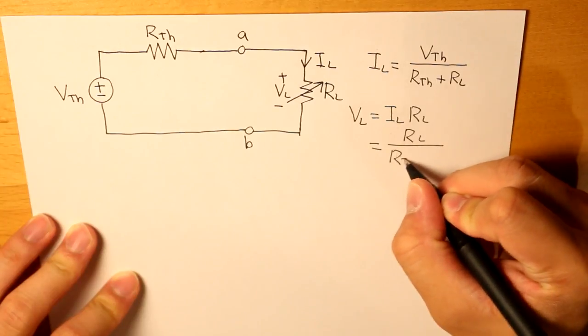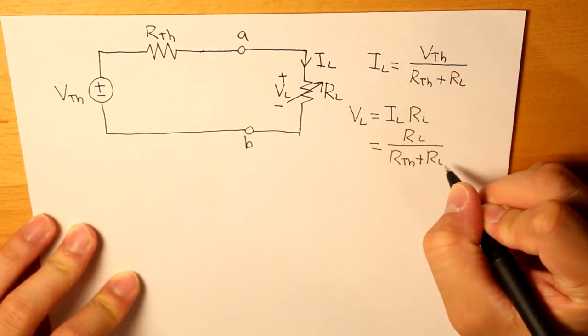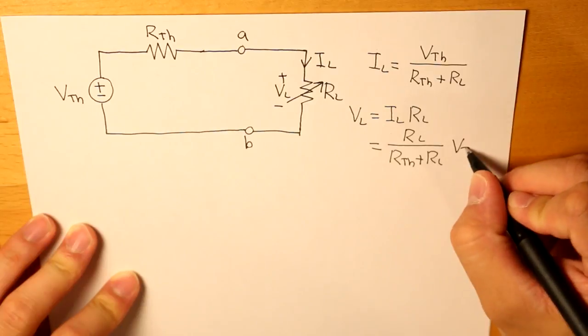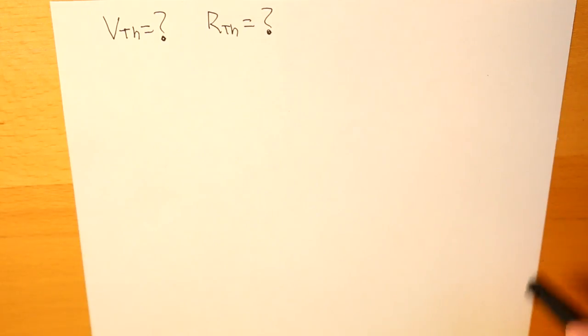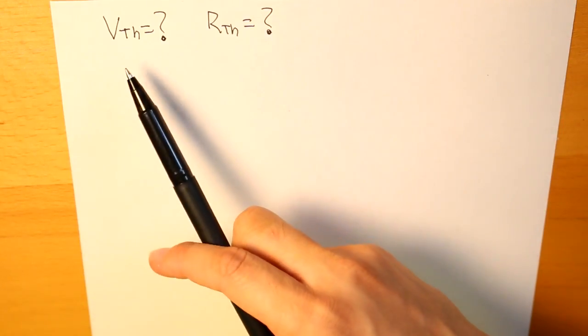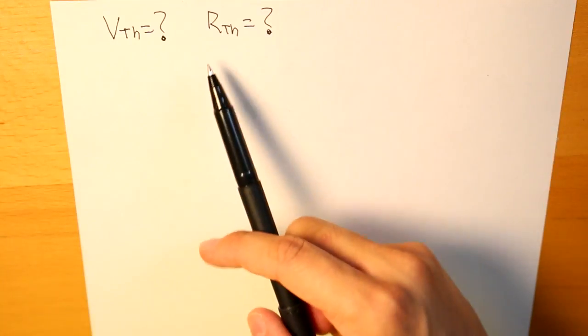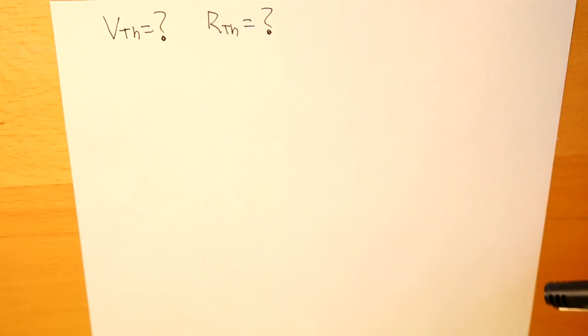by RTH plus RL times VTH. Now the question is what happens if we want to find what the Thevenin voltage is and what the Thevenin resistance is going to be.